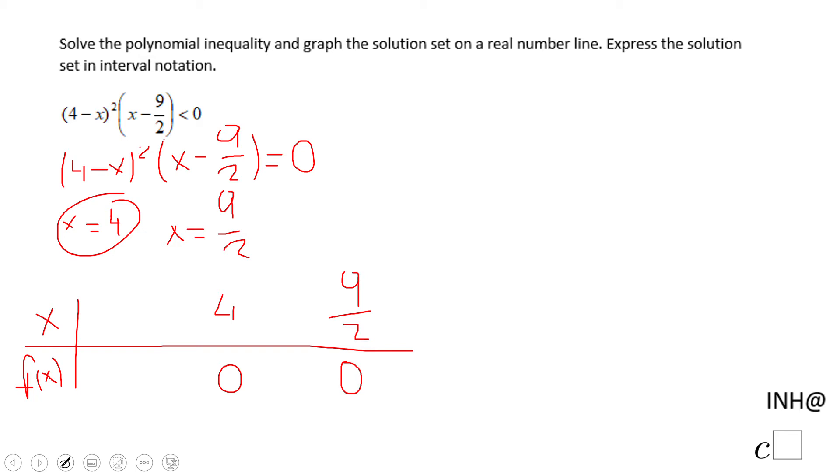We're looking at our first value, zero, to see how the polynomial behaves. If I put zero here, this is going to be positive and this is going to be negative, so we have a negative here. The product of a positive and a negative number is negative.